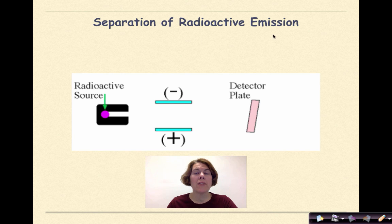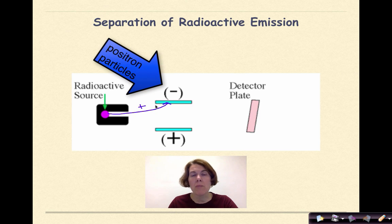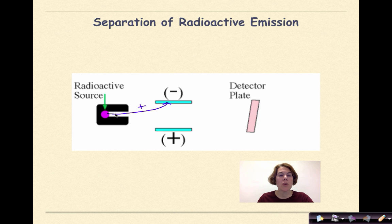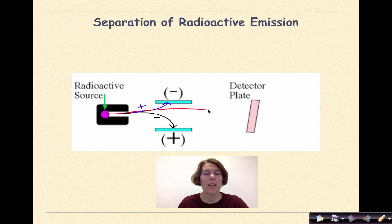When a radioactive source emits radiation that is attracted to a negatively charged plate, that emission must have an overall positive charge — opposites attract — so we can classify it as either positron emission or an alpha particle. If attracted to the positive plate, it has an overall negative charge, most likely beta particles. If the radiation is not attracted to either plate, it has no charge, meaning it must be gamma radiation.